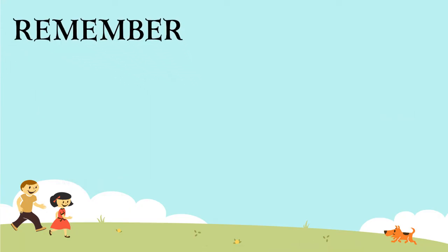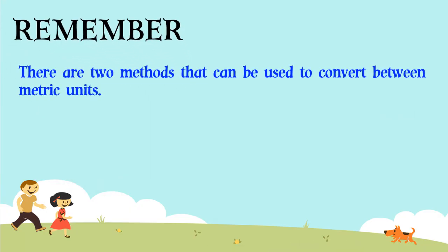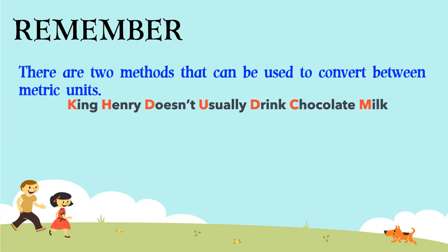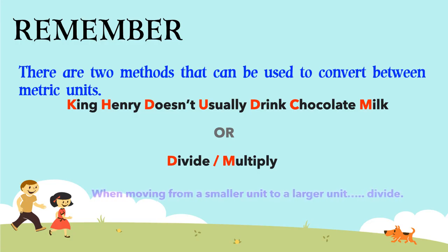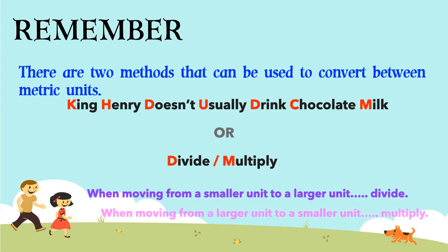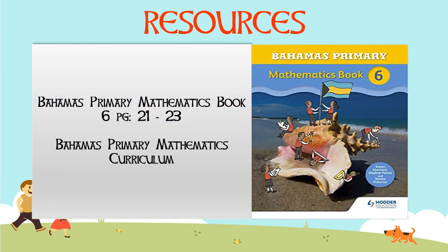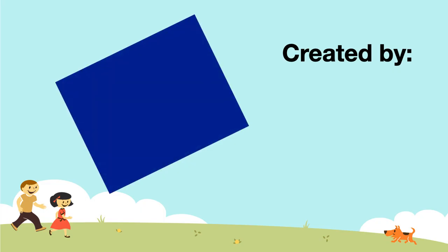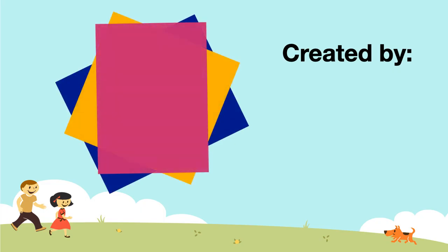Remember, boys and girls, there are two methods that can be used to convert between metric units. You can use the King Henry Doesn't Usually Drink Chocolate Milk method, or the multiplying and dividing method. When using this method, we must remember that when moving from a smaller unit to a larger unit, we divide. And when moving from a larger unit to a smaller unit, we multiply. This lesson was created by Miss Antonia Bain.